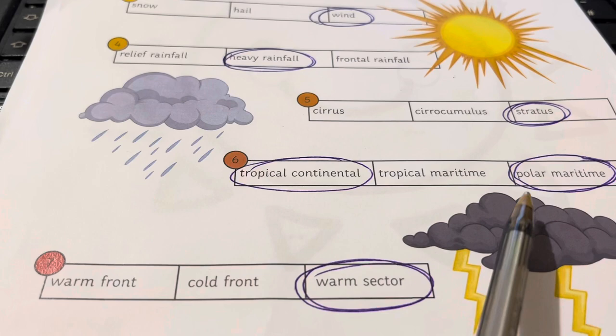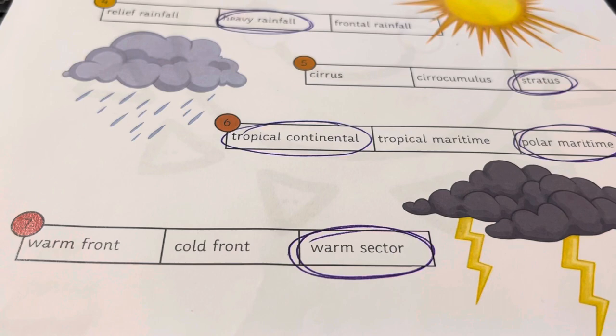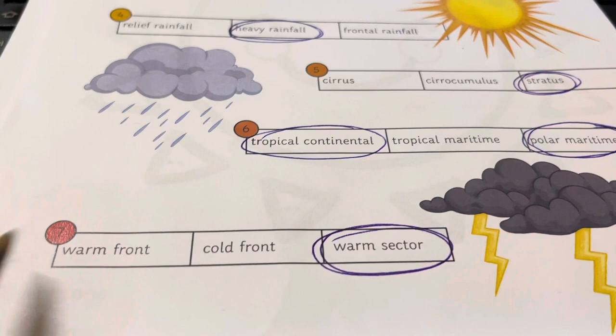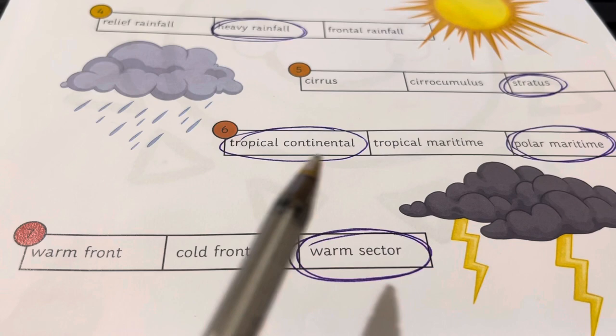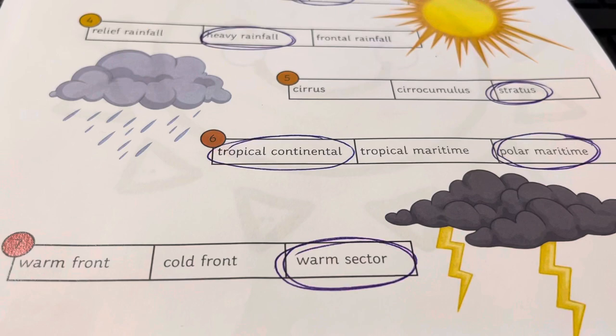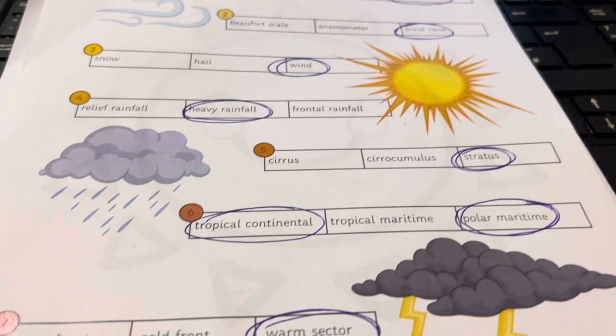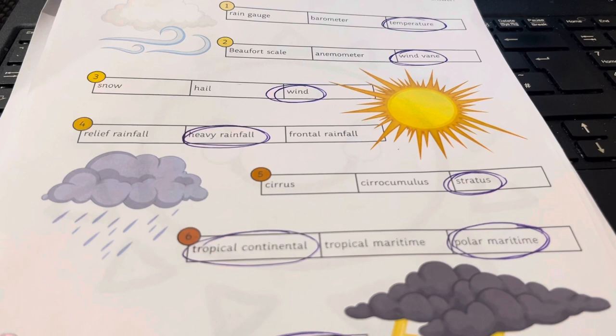So polar maritime is a cold air mass. Then we have a warm front, cold front, and warm sector. The odd one out is warm sector, because warm fronts and cold fronts both bring cloud and rain, whereas a warm sector is just an area of warmer air. So there's lots of learning even within those little activities.